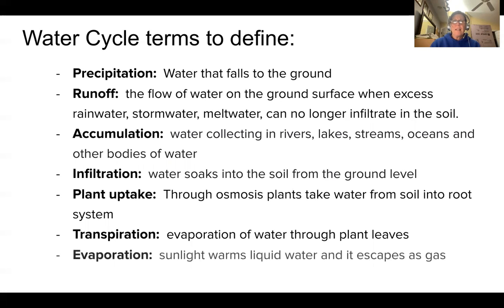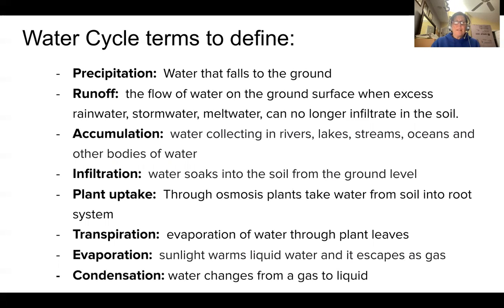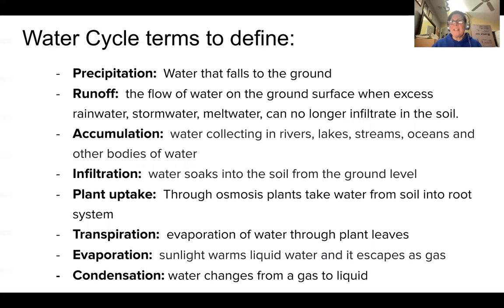Evaporation is when water sitting outside heats up and turns into a gas — it doesn't disappear, it evaporates. Condensation is the reverse: in fact, my glass here has a little condensation on it because I've got steam going in my house for my bronchitis. In the summer when it's humid, there's a lot of water vapor in the air, and when that vapor hits colder surfaces it turns from gas back into liquid — that is condensation.